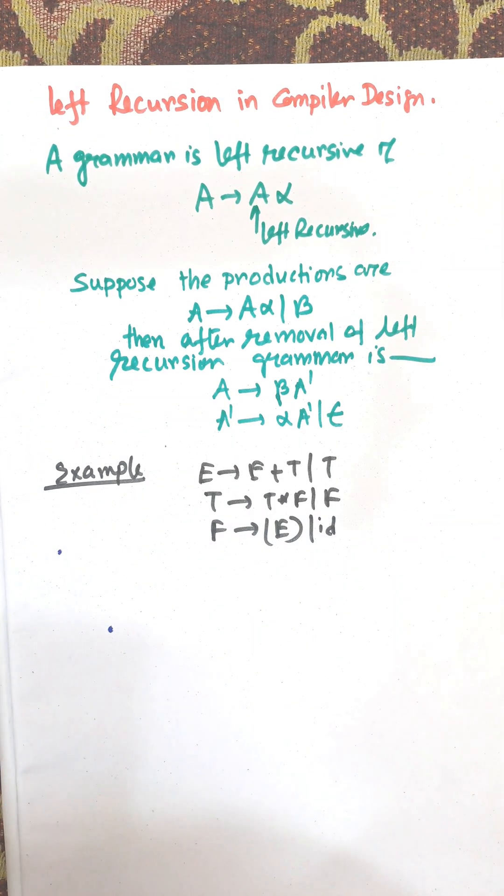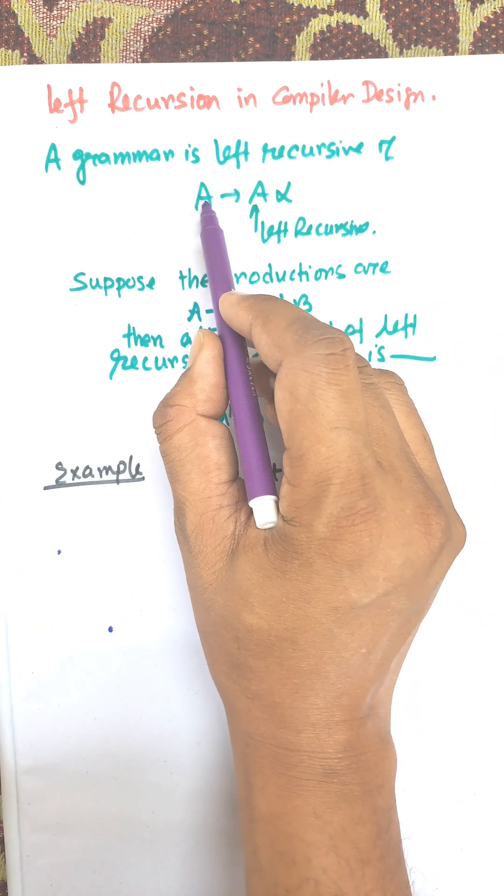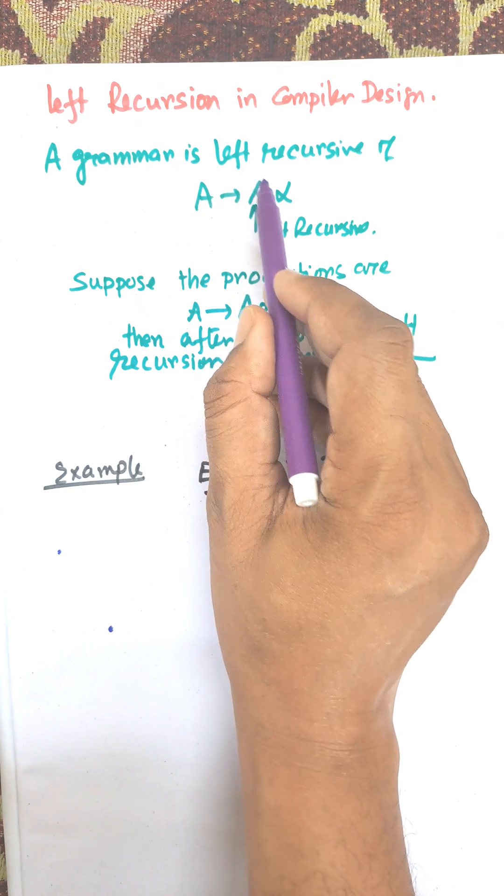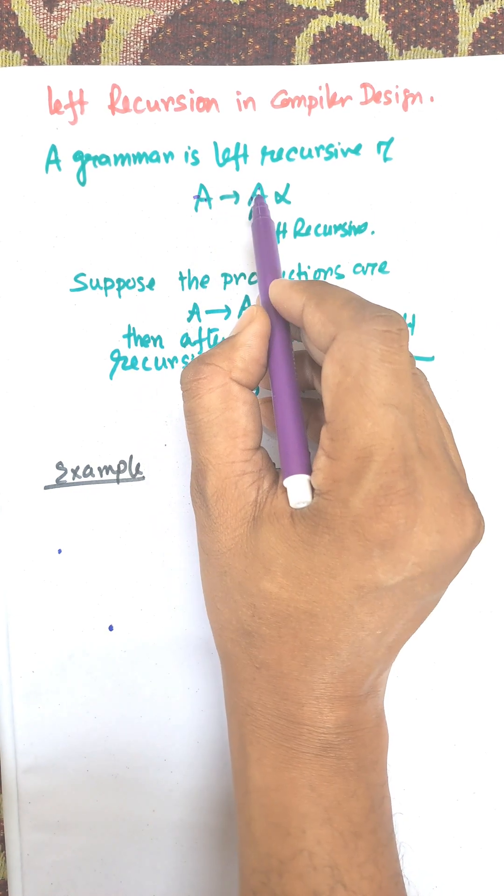Hi everybody, in this video I am going to discuss left recursion in compiler design. A grammar is left recursive if A is a variable when A is repeated in the leftmost position of the right-hand side production. So A is repeated here, so this is left recursive.